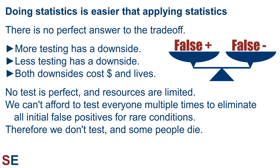I wish I had better news, but there is no perfect answer to this trade-off. More testing has a downside. Less testing has a downside. And both these downsides cost money and lives. No test is perfect, and resources are limited. We can't afford to test everyone multiple times to eliminate all initial false positives for rare conditions. Therefore, for very good reasons, we don't test as much as we could, and some people die.